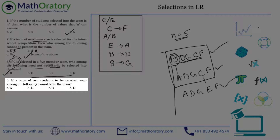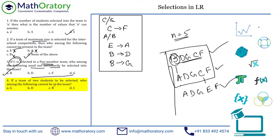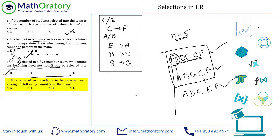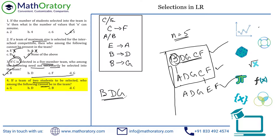Question four: if a team of two students is to be selected, who among the following cannot be in the team? I can straight away rule in B as the answer. If B is selected, then D and G both have to be selected — meaning it requires a minimum three-member team. So B cannot be in a two-member team. That's the answer. If this doesn't hit you directly, you can try G and D first; when you come to B, you'll get it.